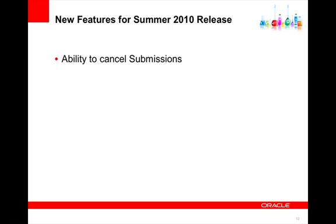I'm going to start with the ability to cancel submissions. This means that when you have submitted something, you can revoke it before it has reached the final state. If the task or submission has started processing, it will actually cancel the work and try to interrupt whatever work has been started.